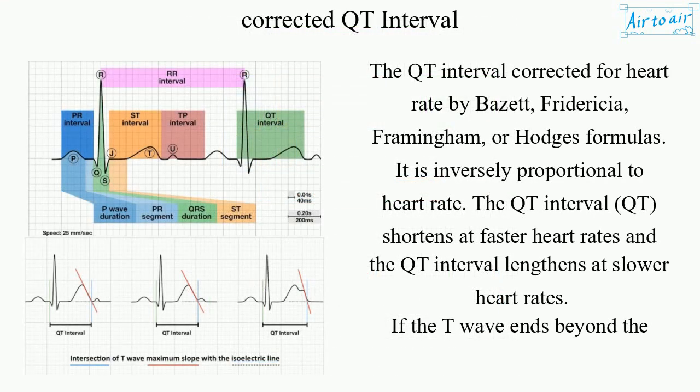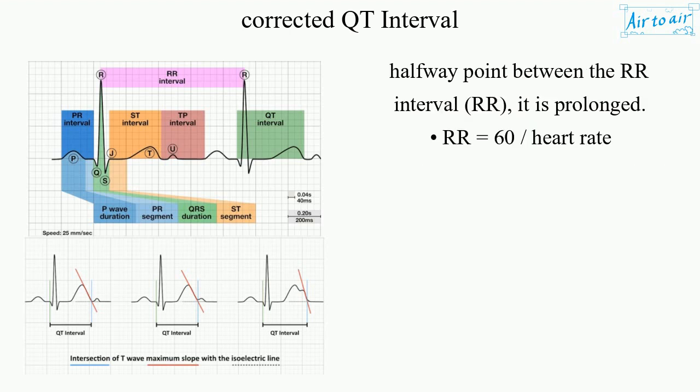The QT interval corrected for heart rate by Bazett, Fridericia, Framingham, or Hodges formulas. It is inversely proportional to heart rate. The QT interval shortens at faster heart rates and lengthens at slower heart rates. If the T wave ends beyond the halfway point between the RR interval, it is prolonged. RR equals 60 divided by heart rate.